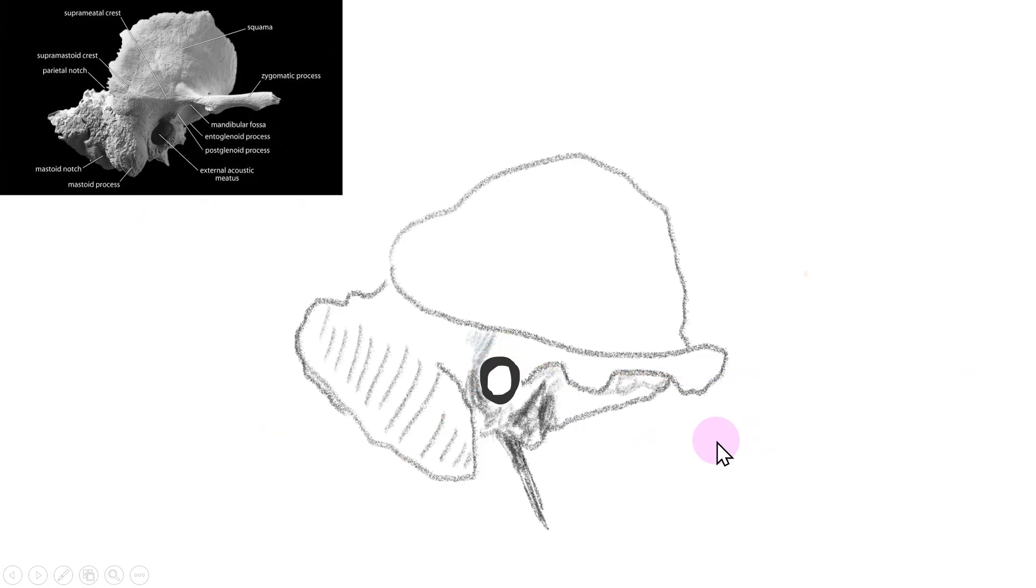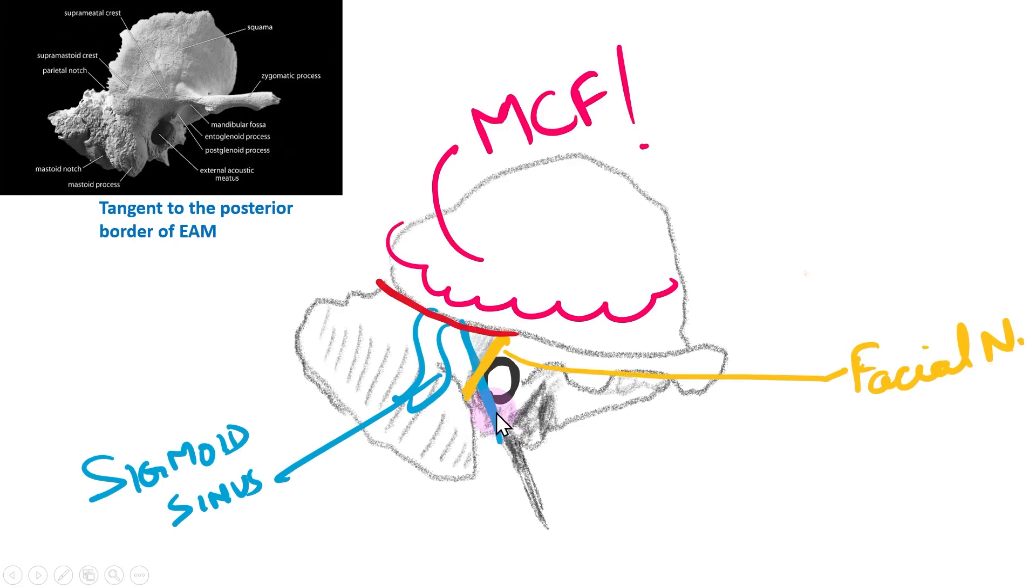This prevents invasion into the sigmoid sinus, which lies posterior to it. These three borders prevent injury to important structures nearby and allow safe entry into the mastoid antrum without causing injury to surrounding structures.